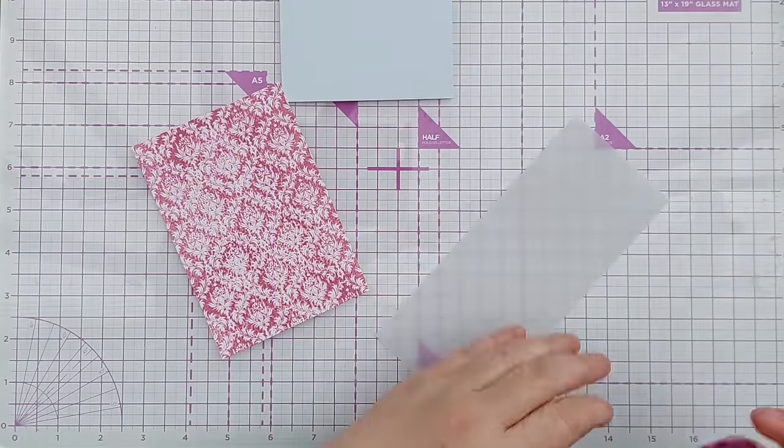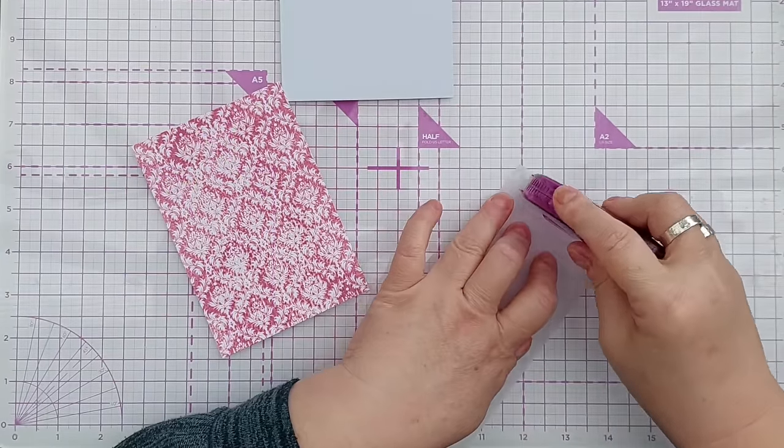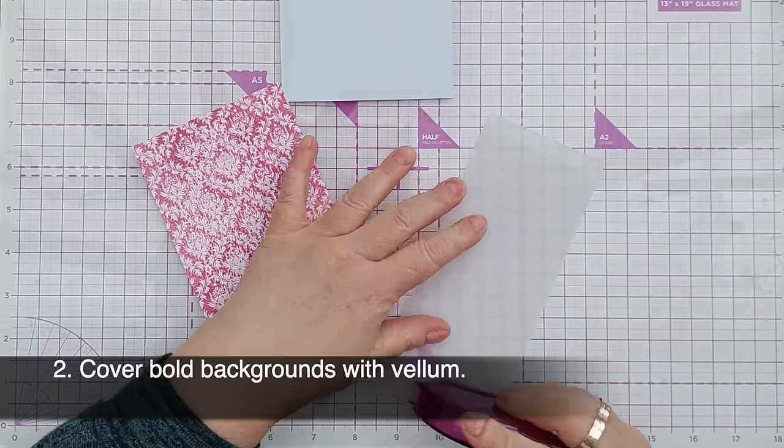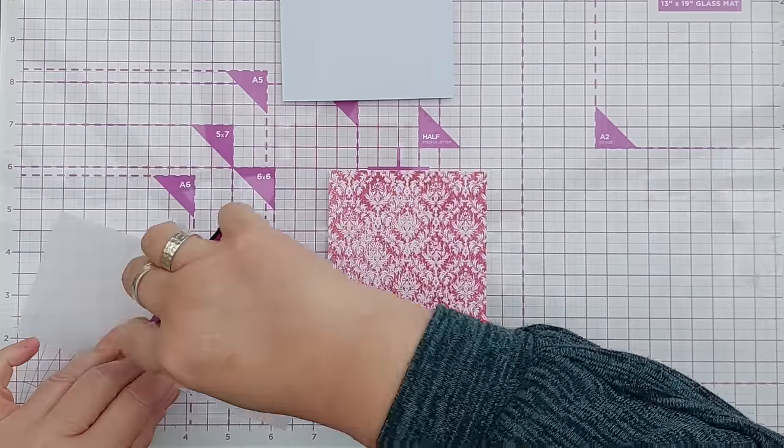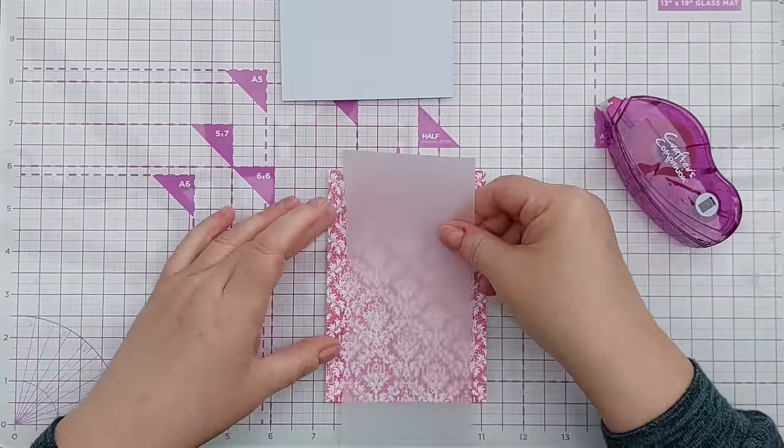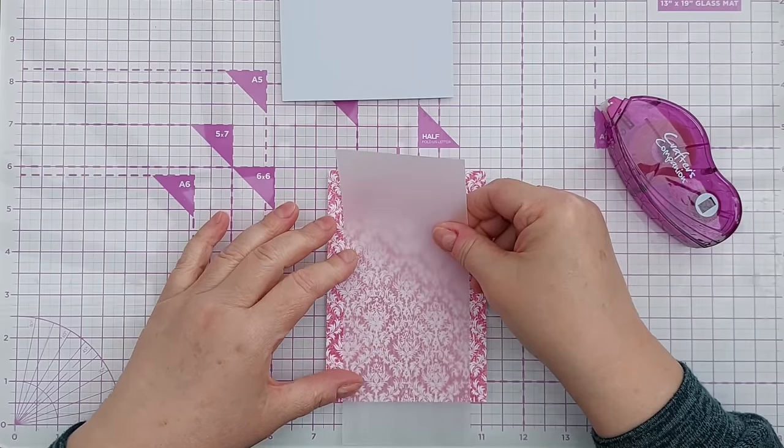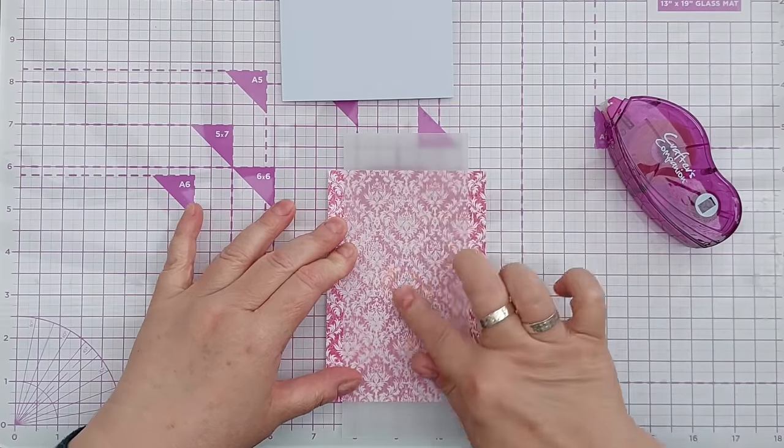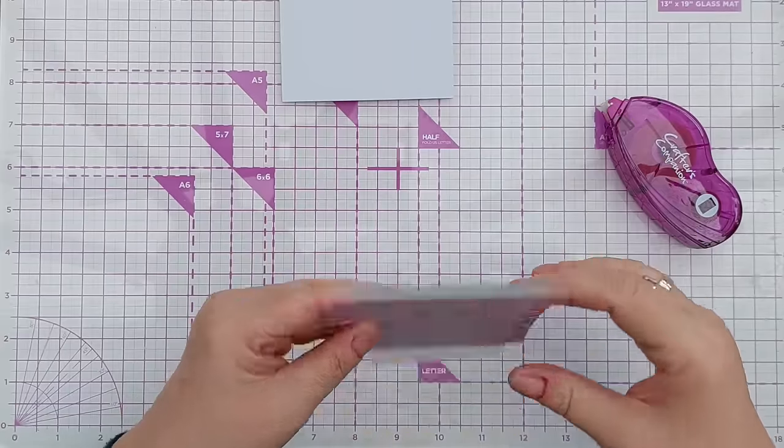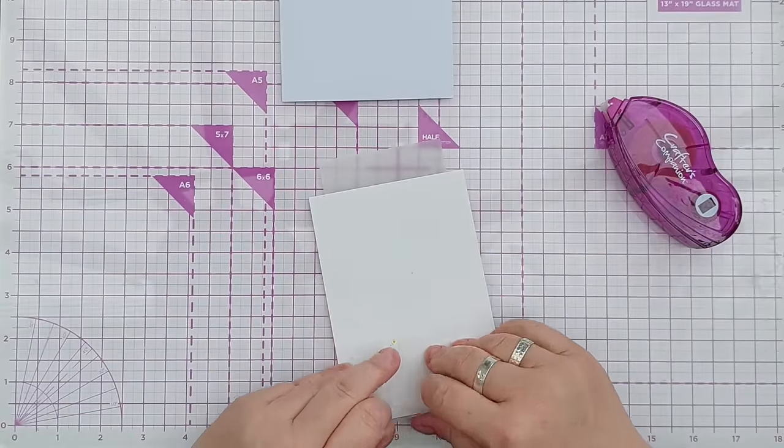So on to technique number two and that is to cover your bold backgrounds with vellum. Vellum is a translucent sometimes plasticized paper so you can see through it but it does have the effect of toning down or muting the colour or pattern behind it.